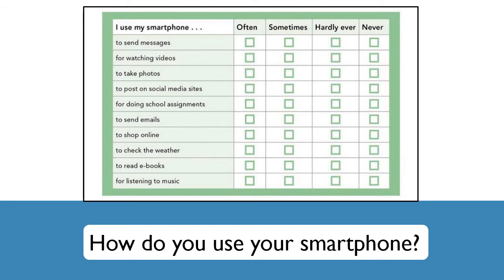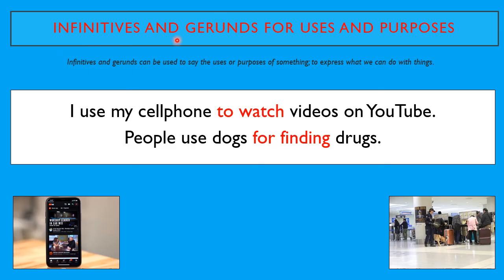How do you use your smartphone? Let us know in the comments below. Infinitives and gerunds for uses and purposes. Infinitives and gerunds can be used to say the uses or purposes of something, or to express what we can do with things. For example: I use my cell phone to watch videos on YouTube. People use dogs for finding drugs. In this case, the use of a cell phone is to watch videos on YouTube. And for the second one, people use dogs to find drugs, or for finding drugs. So here we are using infinitives and gerunds to say what we do with things.